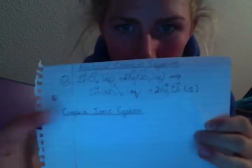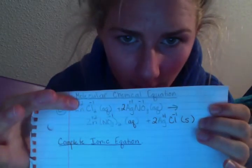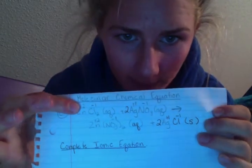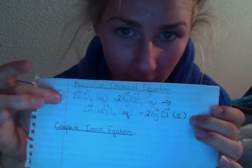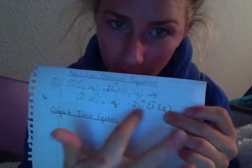Using the same example from the molecular chemical equation, we are going to get the complete ionic equation, which is when you take all of the aqueous compounds in the molecular chemical equation and break them apart. You can't break apart solids, so they just stay in the compound form.